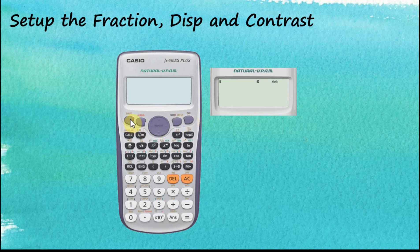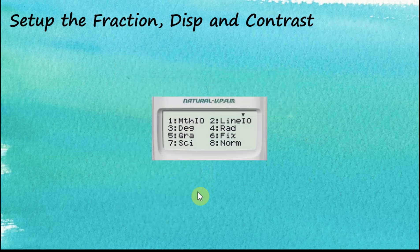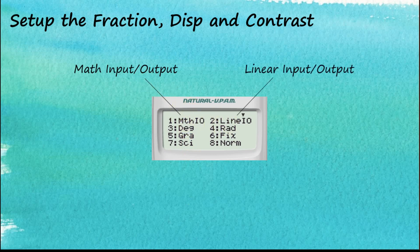This is the setup screen. We can see that we have MathIO and LineIO — this governs how you input your data and how the answer is displayed. After that, we have the units of angle: degree, radian, and gradient — these three are the units of angle.